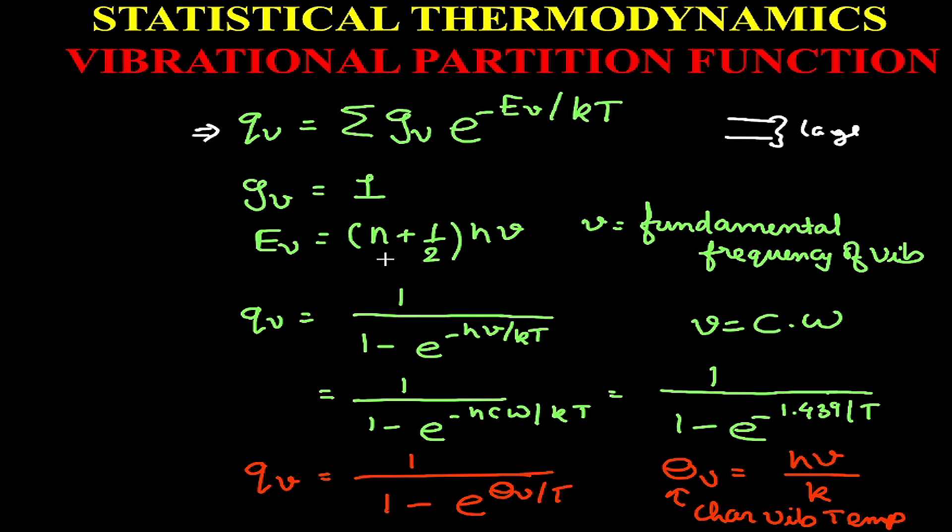of the Schrödinger wave equation for the simple harmonic oscillator. It is given by Ev = (n + 1/2)hν, where h is Planck's constant, ν is the fundamental frequency of vibration, and n are integers: 0, 1, 2, 3, and so on.